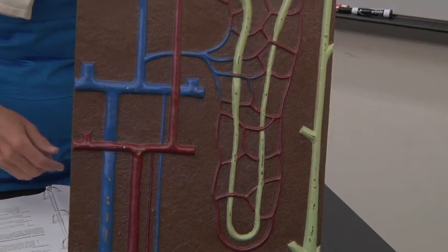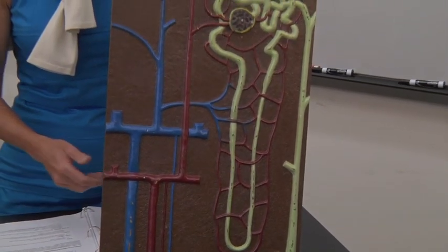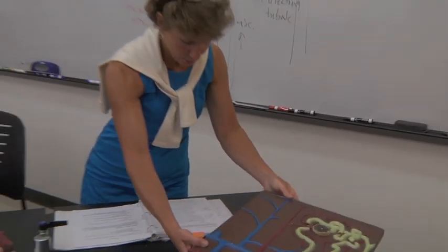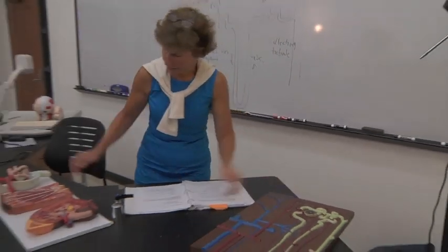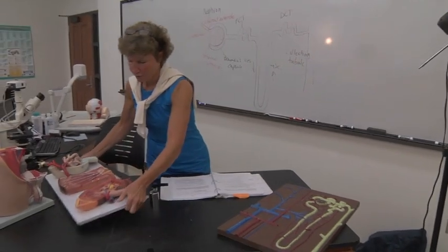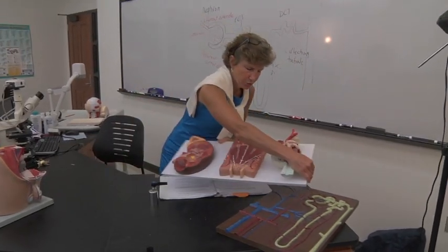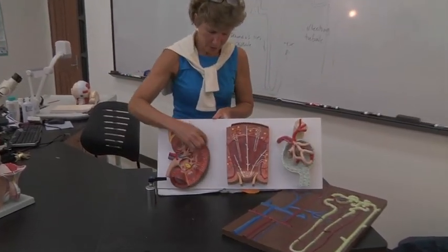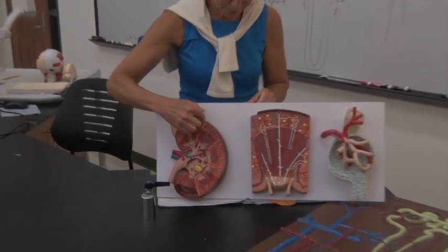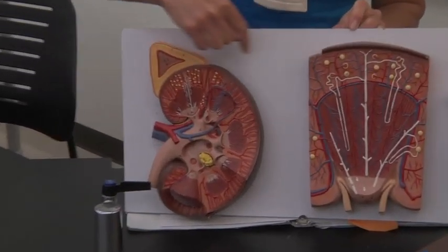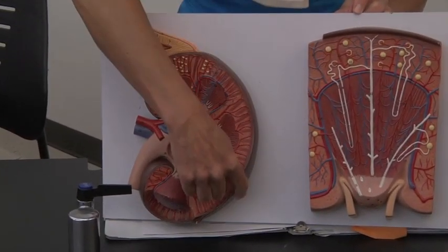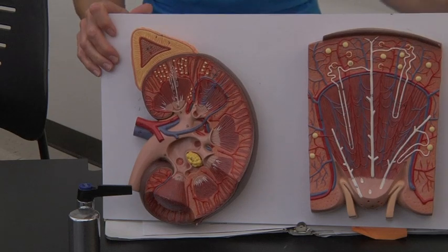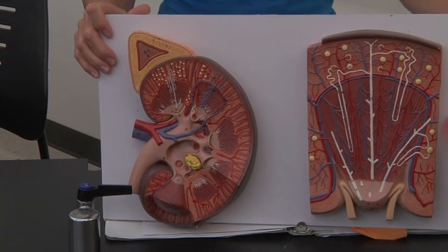Let's look on page 99 in your lab guide, and we can just start going down to make sure we've covered everything. We'll start first with the renal capsule, and that is just this thick layer of connective tissue that surrounds the kidney, and that just kind of keeps the kidney together.